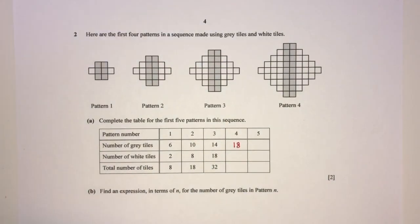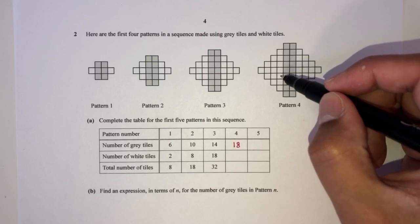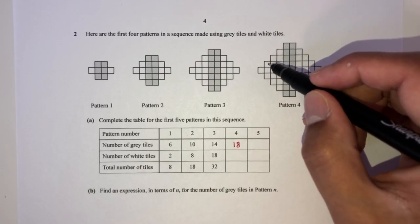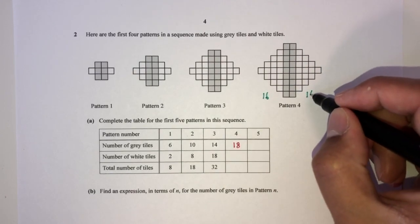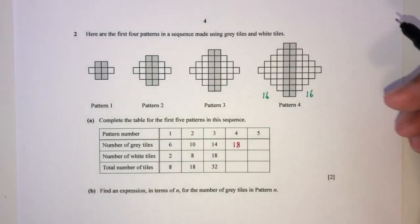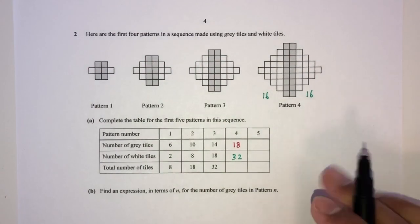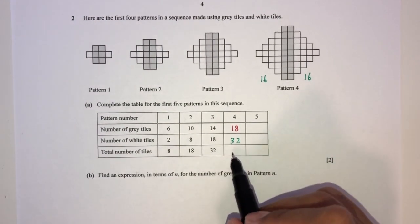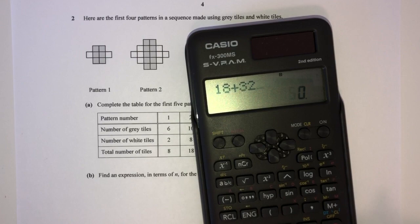For the white tiles in pattern four: counting one side gives 16, and by symmetry the other side also has 16, so the total white tiles is 32. Together, gray plus white is 18 plus 32, which equals 50. We can use the calculator to double-check — that's 50. So for pattern number four, total tiles is 50.